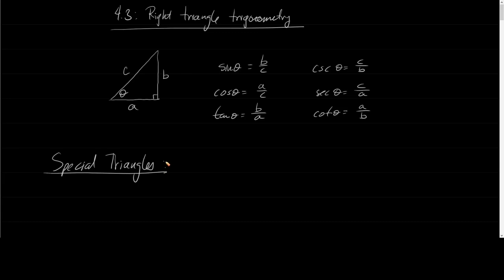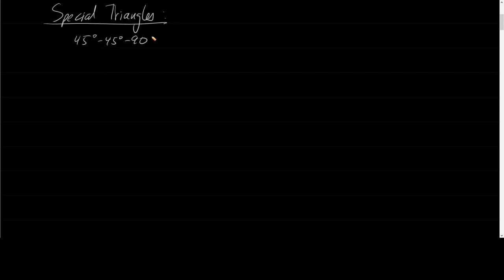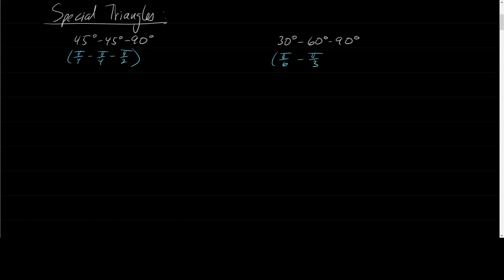We have two kinds of special triangles. In degrees, we have the 45-45-90 — in radians, pi over 4, pi over 4, pi over 2 — but we always say it in degrees: 45-45-90. And we have the 30-60-90, which in radians would be pi over 6, pi over 3, pi over 2.